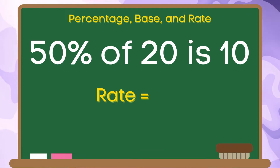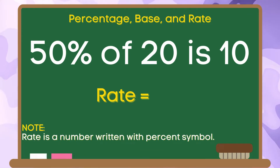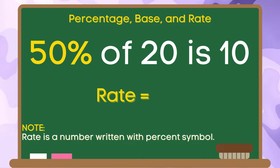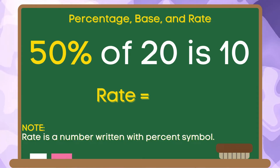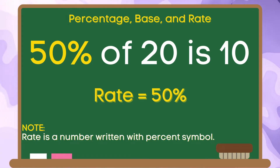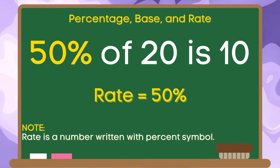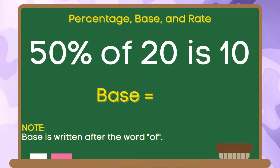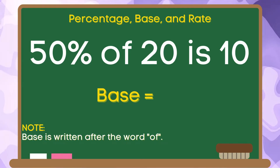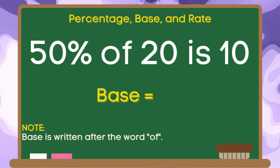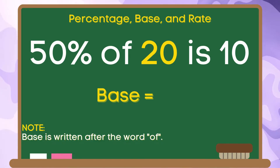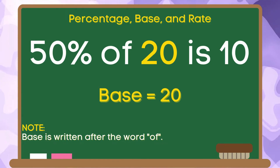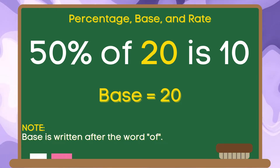Now let us identify the rate. Remember, rate is a number written with a percent symbol. In this example, we have 50 with a percent symbol, so the rate is 50%. Let us identify the base. Remember, base is written after the word 'of.' As you can see, 20 is written after the word 'of.' Therefore, the base in this given example is 20.